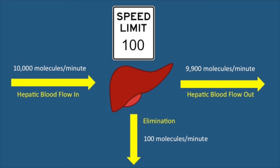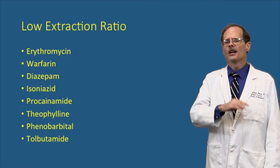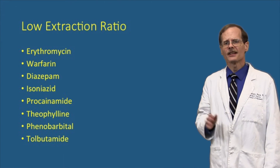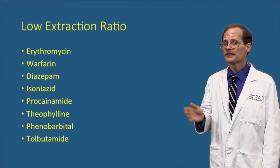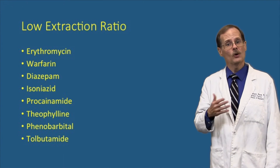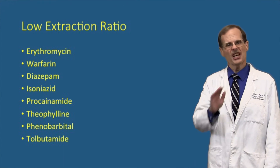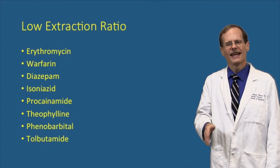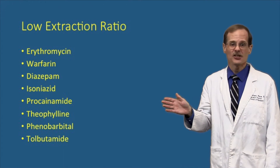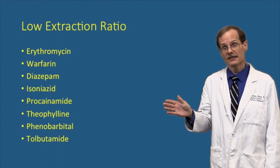Same with doubling blood flow — the liver can still only get rid of 100 molecules per minute. Drugs like erythromycin and warfarin have low extraction ratios, so changes in hepatic blood flow aren't going to change how fast they get removed.